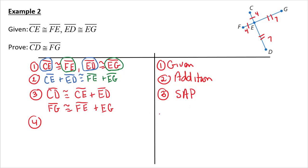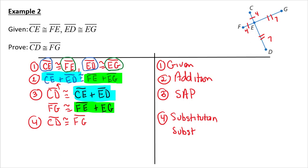The reason I did that is notice in step two, I have CE plus ED. In step three, I have CD. So I can now substitute in CD in that piece. I have FE plus EG. I can substitute in FG. And that's substitution. So that's what I call a segment addition proof, where I have to add common segments together.